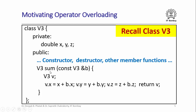For now I am concerned with the member function sum. This takes as parameter another object of class V3. The const keyword denotes that this object is not going to be modified within this member function. Inside, it allocates a new object V of class V3 and sets the X data member of that object to the sum of the X data members of the receiver object and V, and similarly for Y and Z. Finally it returns V. So this member function computes the vector sum of the receiver object with the parameter object.